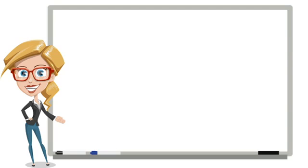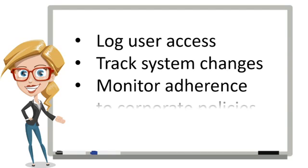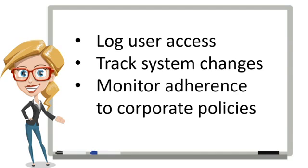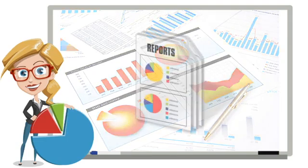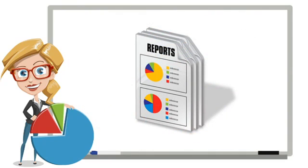The second main function of a SIEM is to provide logging and reporting for compliance purposes. For almost every compliance regulation, there are requirements to log user access, track system changes, and monitor adherence to corporate policies. A good SIEM solution makes these tasks much easier by collecting this data from all your systems. When it's time for an audit or exam, you can simply generate the appropriate compliance reports and send them to the appropriate people. Of course, your SIEM must have the needed compliance functionality and reports built in to be effective, but many SIEM offerings don't.